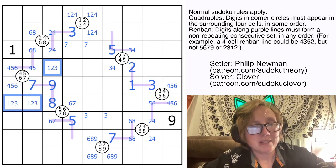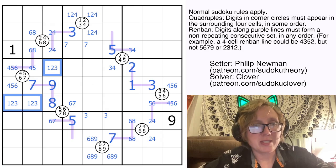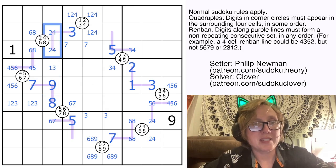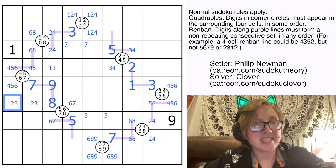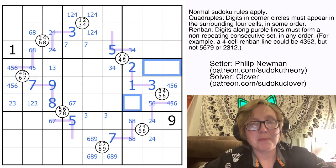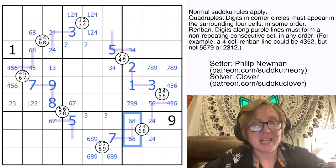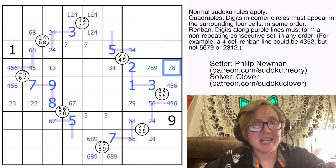Now I'm going to pencil in 1, 2, and 3 here, because those are my three remaining digits in the region. This can't be a 2 thanks to the 2-4 pair and the 2 here. This can't be a 1 because there's a 1 there already.